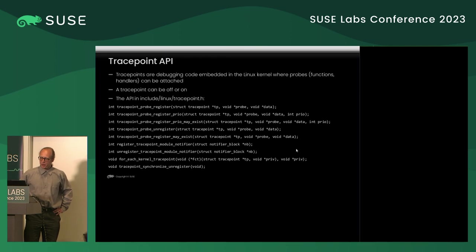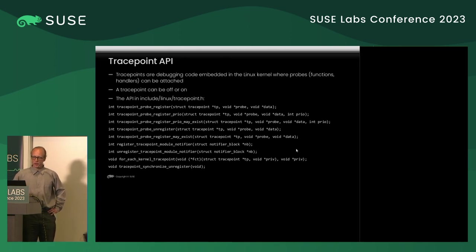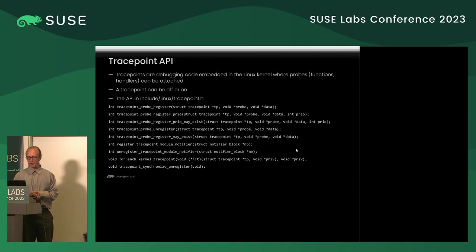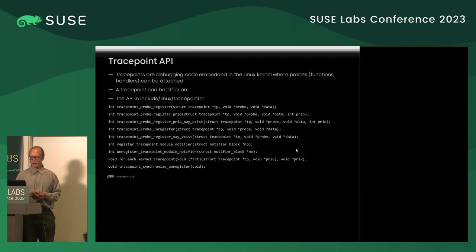I usually start the description with kprobes and kretprobes, but I'd argue that trace points are more important because trace points do not get missed — they get executed. Also the call stack is much shorter; there's no intermediate call stack because the trace point executes your handler right away. Trace points are debugging code embedded in the kernel, and probes can be attached to them. A trace point can be off when it has no probes, and when it is off there is a penalty of only two instructions — almost unnoticeable.